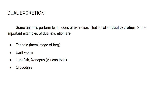So these are the organisms capable of excreting both ammonia and urea depending on conditions. This is all about ureotelism. In the next lecture, we will discuss uricotelism, where uric acid is eliminated. So far we have covered ammonotelism and ureotelism; next will be uricotelism.